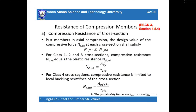To calculate the resistance of compression members, the first case is the compression resistance of a cross section for members in axial compression. The design value of compressive force should be less than or equal to the compressive resistance of the cross section. For Class 1, 2, and 3, the formula is: area times yield strength divided by the partial safety factor γM0. For Class 4 thin-walled cross sections, the effective area is used instead of the gross area.